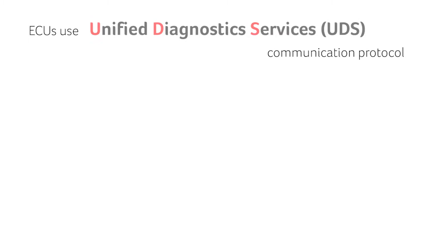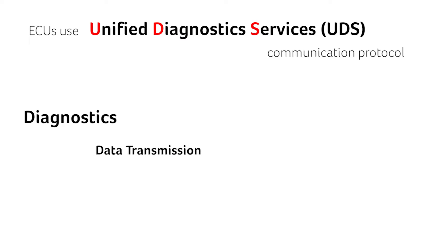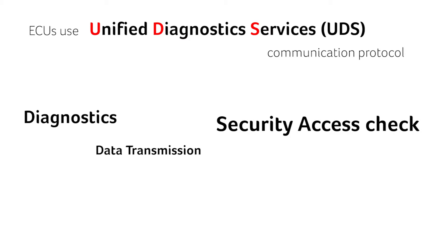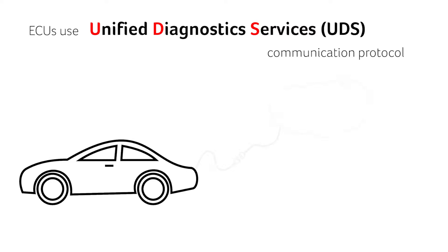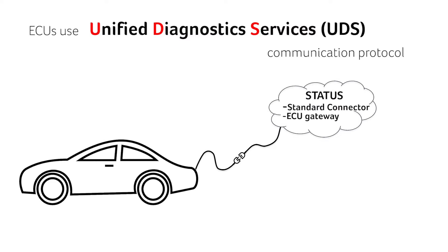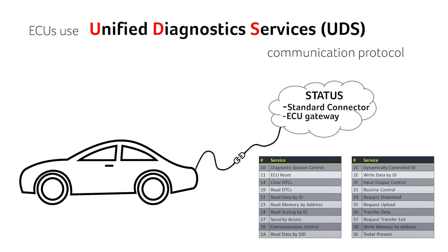Many electronic control units use a communication protocol called the Unified Diagnostics Services. UDS is responsible for diagnostics on cars, data transmissions, security access checks, and a lot of other services. So basically, when people get their car serviced, the car workshop can query the status of all ECUs via a standard connector and a gateway ECU.